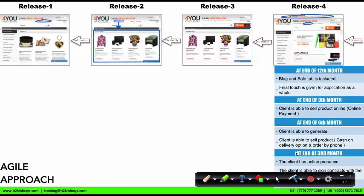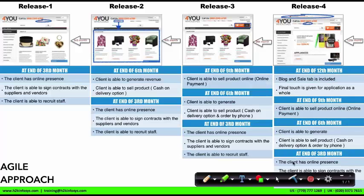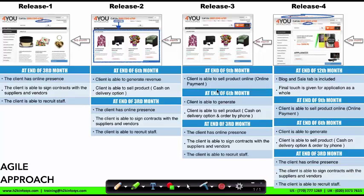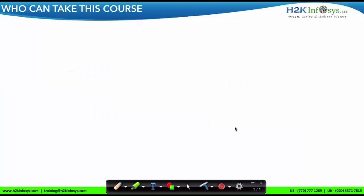Let's see the overall development of the project. Instead of making the client wait 12 months as in the traditional approach, here in Agile we put effort to give early benefit to the client by developing the software incrementally. This is the concept of the value-driven approach in Agile.